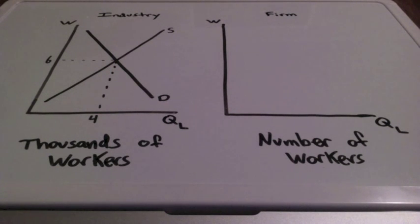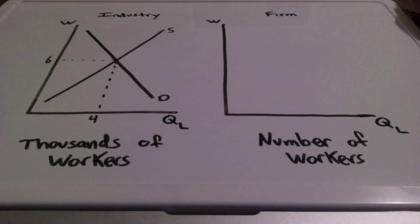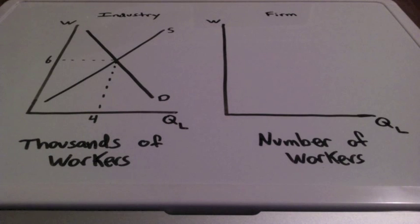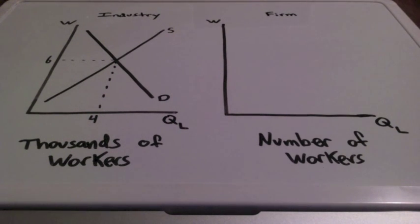In this lesson, we're going to discuss the perfectly competitive labor market, and we have two side-by-side graphs. The one to the far left represents the industry, and the one to the far right represents the firm.